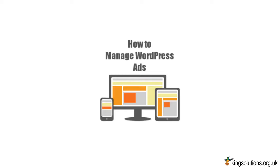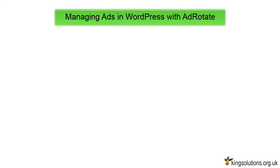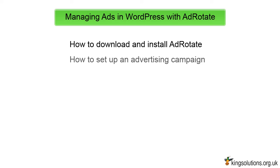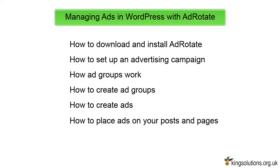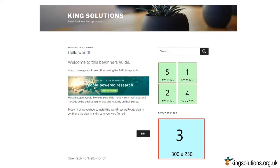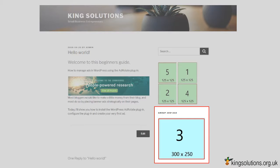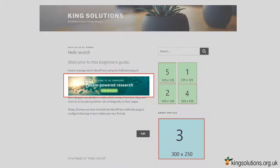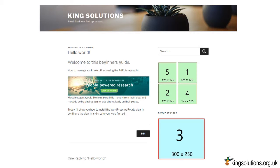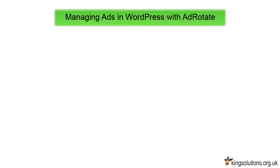Advertising programs like Google AdSense require publishers to place a code snippet on their website. You can do this by editing your theme files or letting an ad management plugin handle it for you. Inserting code directly into your theme file risks breaking things and placing different ad sizes throughout your site is not easy.